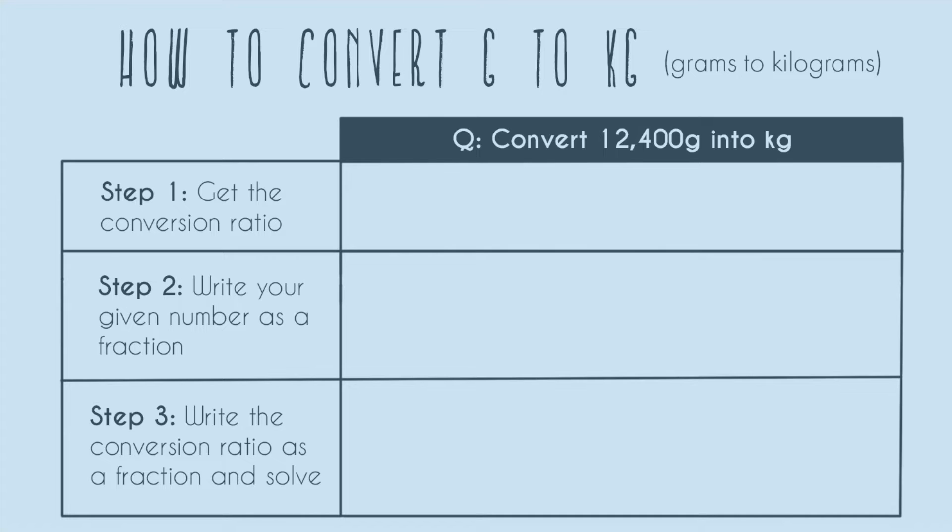So step one, we need to get the conversion ratio. In every conversion problem, you're going to have two units. You're going to have the units you start in. And for this problem, that's grams, because we can see that our number says 12,400 grams. And then we're going to convert into kilograms, just because the problem asks us to. So before we can do anything, we have to know how many grams equals how many kilograms, or how many kilograms equal how many grams. And you can get this a couple of ways.